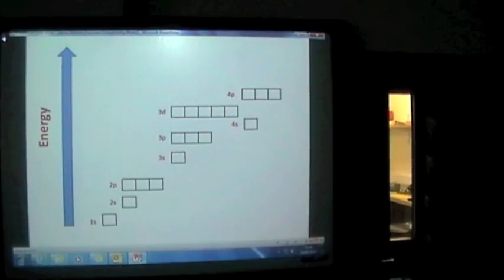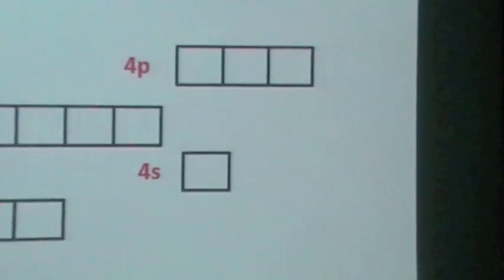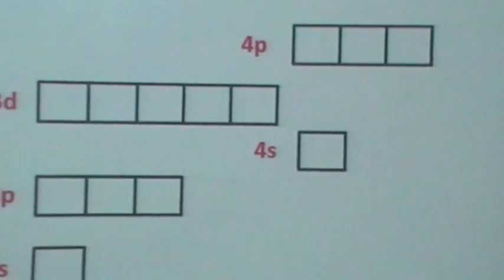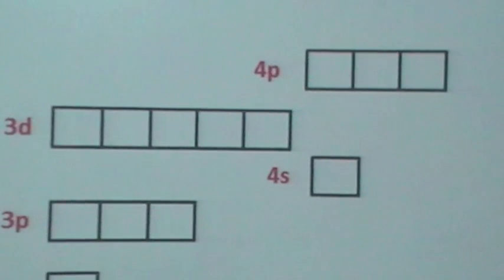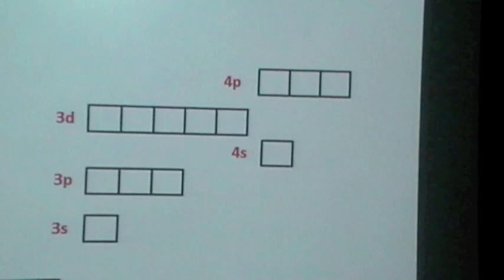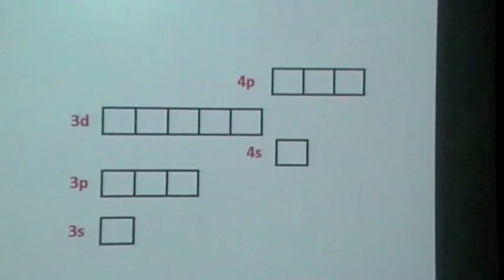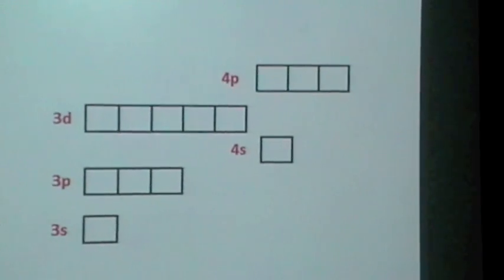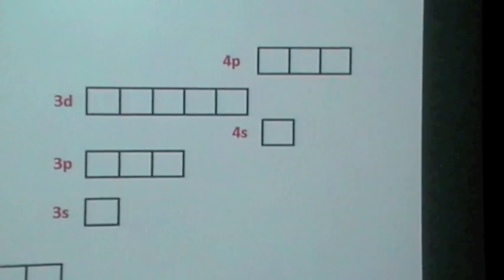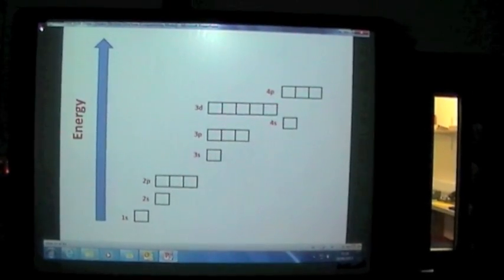3p, and then this is what catches everybody out. If you look, it's actually the 4s sublevel that's lower in energy than 3d, so we've got to be really careful when we get up to there. And the last subshell that we need to worry about is the 4p, because at A-level all we need to know is for the first 36 electrons, the first 36 atoms. So there's everything in that one slide.